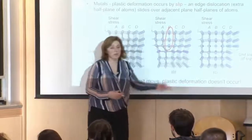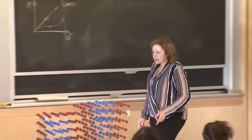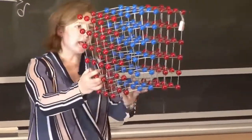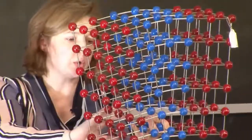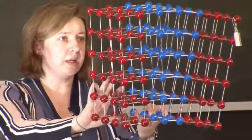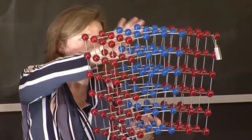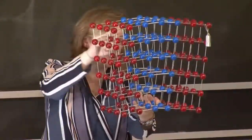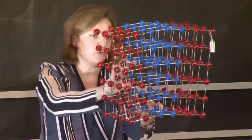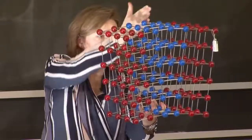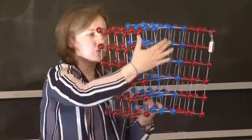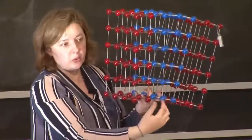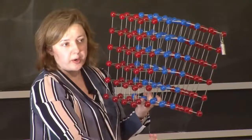Eventually, you end up in a deformed material. An example of such a defect can be seen in this model — this extra plane of atoms. When you look at the material beneath and above the defect itself, it looks roughly perfect. The atoms around the dislocation core are slightly deformed from their original position, but there is this extra plane that runs through the upper part of the crystal and does not penetrate through the lower part.